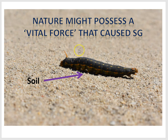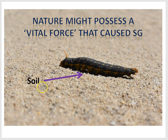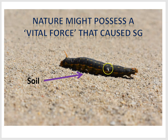Now, how would this happen? Lots of folks for thousands of years thought nature had a vital force — some kind of power that could interact with non-living materials in the soil to produce all kinds of creatures, like insects. And if this caterpillar spontaneously emerged from the soil, the caterpillar did not really have parents that were passing on caterpillar-like traits.